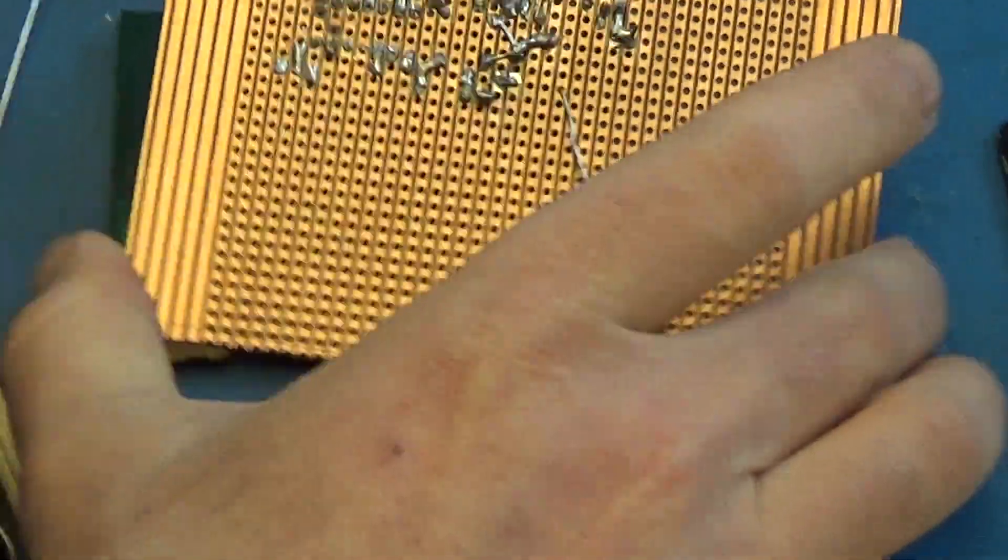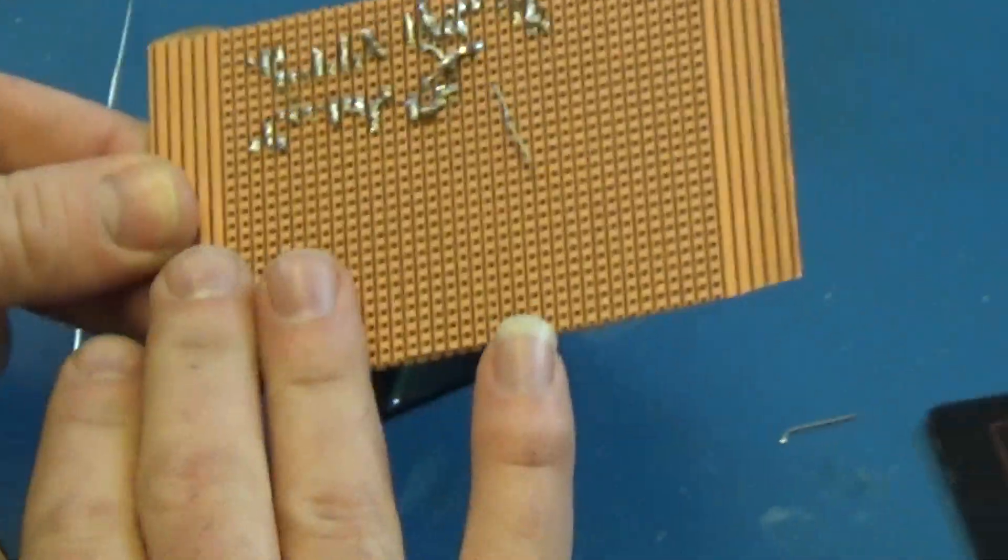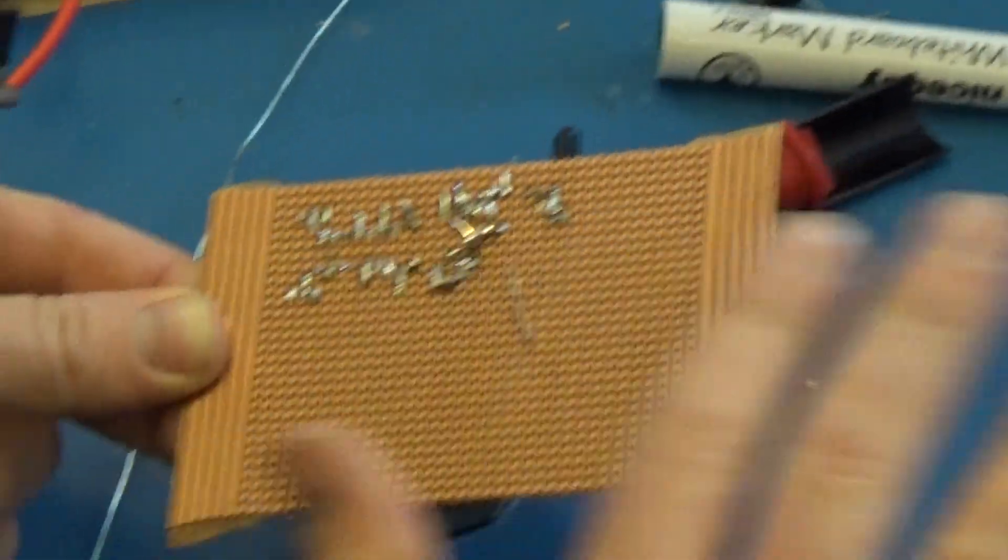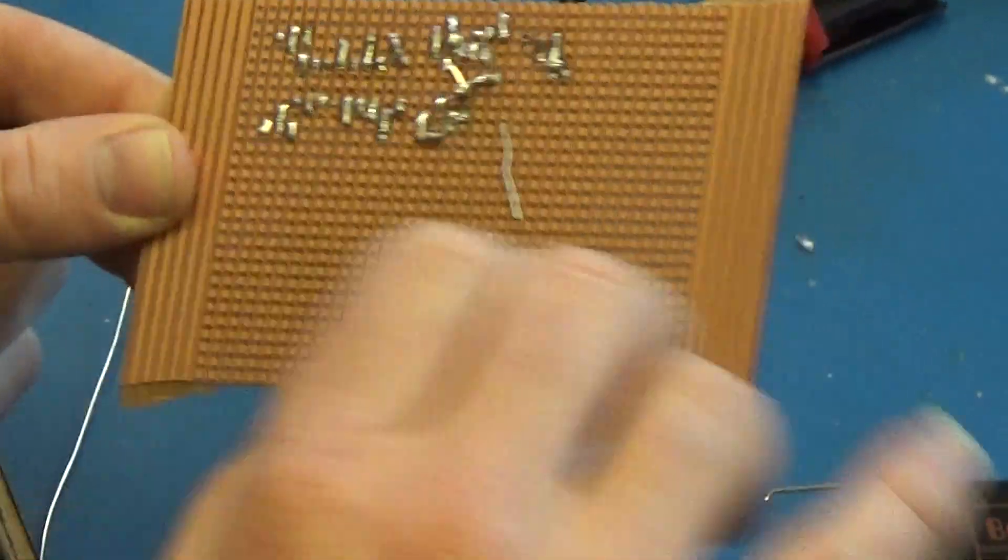What you've done there is what we used to do in the old days, when you just had a piece of FR4 with no copper cladding on. It's like dead bug, really.